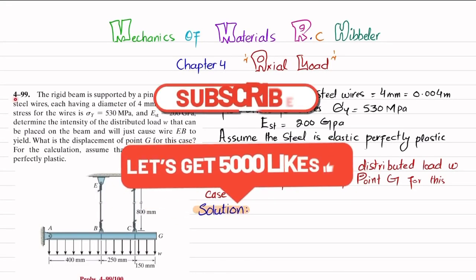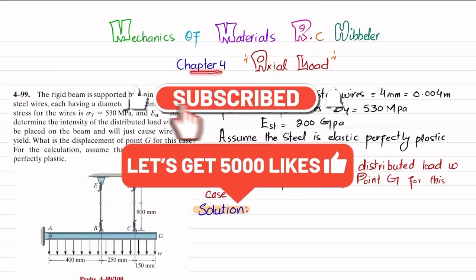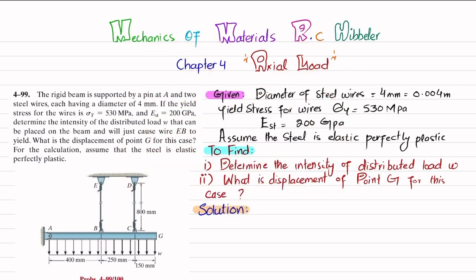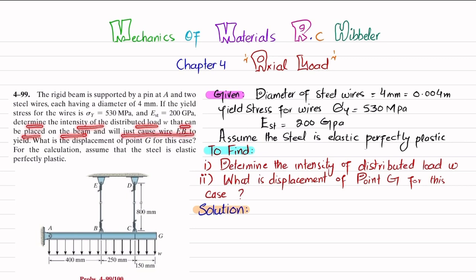Welcome back. Problem 4-99 is taken from Chapter 4, Axial Loading, from the book Mechanics of Materials by RC Hibbeler. The problem states: a rigid beam is supported by a pin at A and two steel wires having a diameter of 4 millimeters. The yield stress for the wire is 530 megapascals and the modulus of elasticity is 200 gigapascals. Determine the intensity of distributed load w that can be placed on the beam that will cause wire BE to yield, and find the displacement of point G.